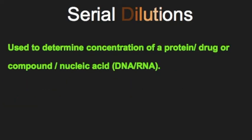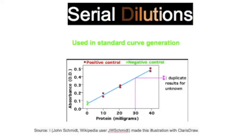You need to use serial dilutions whenever you need to determine the concentration of a protein, drug, or nucleic acid in an unknown sample by comparing it to known concentrations that you use to create what is called a standard curve.